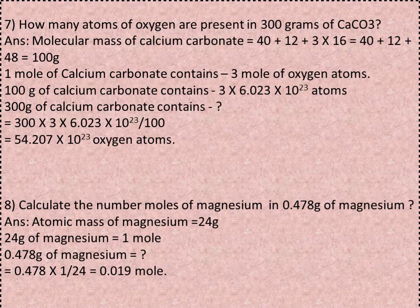Q7: How many oxygen atoms are present in 300g of calcium carbonate (CaCO₃)? Molecular mass of CaCO₃ = 40 + 12 + 3 × 16 = 100g. 1 mole of CaCO₃ contains 3 moles of oxygen atoms. 300g of CaCO₃ contains 300 × 3 × 6.022 × 10²³ ÷ 100 = 54.207 × 10²³ oxygen atoms.